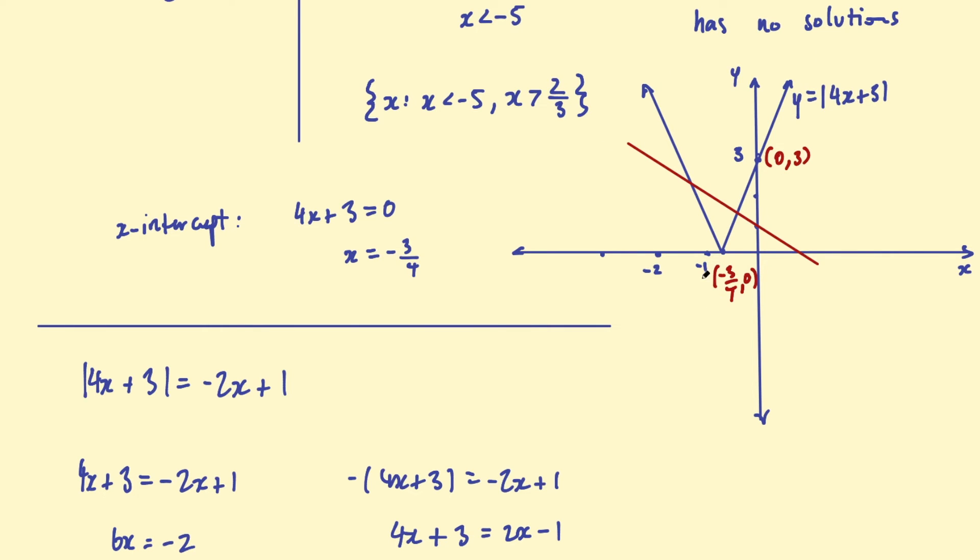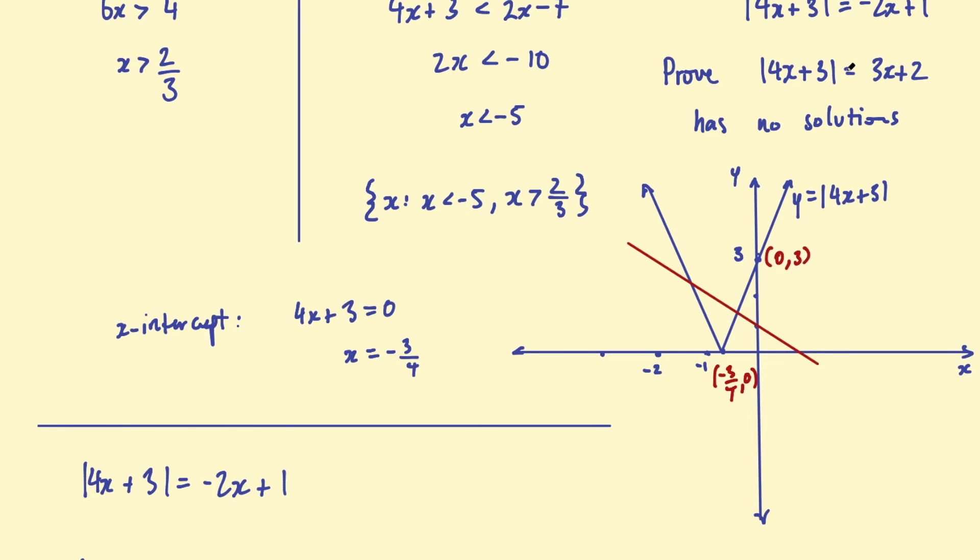But sometimes, you'll have the case where there are no solutions. Now, usually, you'll probably prove this graphically. So, for example, if we want to graph this straight line 3x plus 2, well, the y-intercept is at plus 2. You could also find the x-intercept. Remember, that's when that equals 0. So, you'll find the x-intercept is negative 2 thirds and you see that this line never cuts this graph because the gradient is also less. So, it will never cut the graph down here anywhere. And also, it's never going to catch up. It's never going to sort of magically come across here and cut the graph somewhere up here because the gradient is less. So, that's one way you could prove the absolute value of 4x plus 3 equals 3x plus 2 has no solutions because those graphs never intercept.